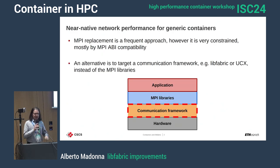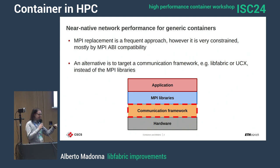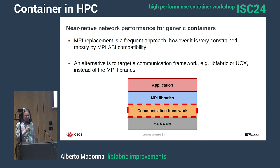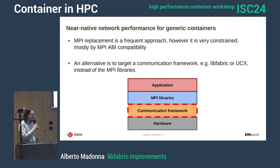When we talk about bringing near-native network performance to generic and portable containers, the more established and practiced approach is generally the one of taking an optimized MPI stack from the host and injecting and replacing it into the container. This has been done several times across several papers and is generally well documented, but this approach has several problems and is very constrained, especially by MPI ABI compatibility.